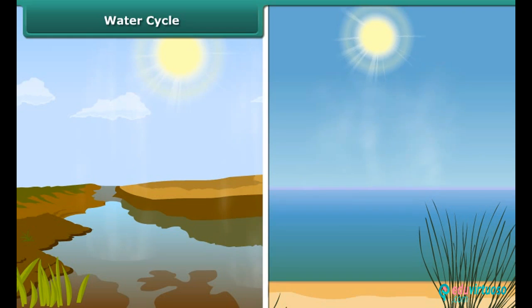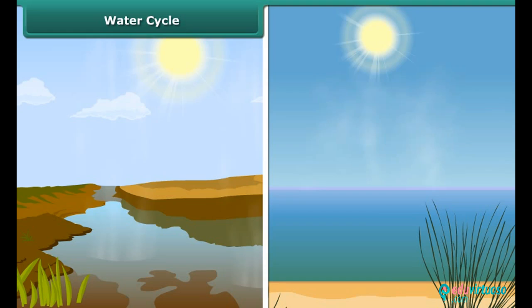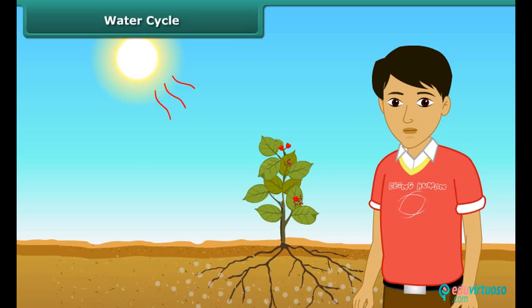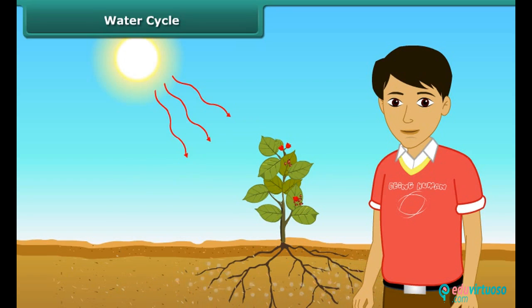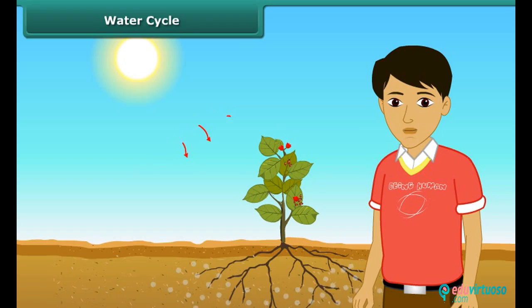Water in oceans, seas, rivers, etc. gets heated up by the sun and turns into vapor. This process is known as evaporation. Plants also absorb water from the soil — they use a part of this water to prepare their food and release the excess water into the air as water vapor.